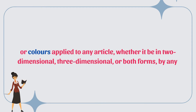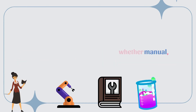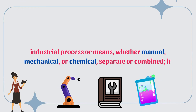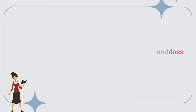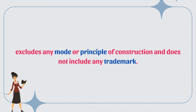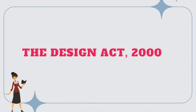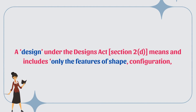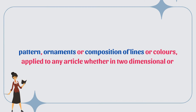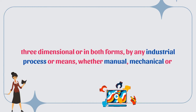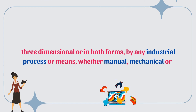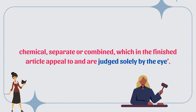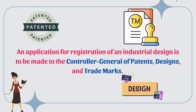Industrial Designs: industrial design refers solely to the features of shape, configuration, pattern, ornament, or composition of lines or colors applied to any article — whether in two-dimensional, three-dimensional, or both forms — by any industrial process or means, whether manual, mechanical, or chemical, separate or combined. It excludes any mode or principle of construction and does not include any trademark. The Designs Act 2000 defines a design as features which in the finished article appeal to and are judged solely by the eye.